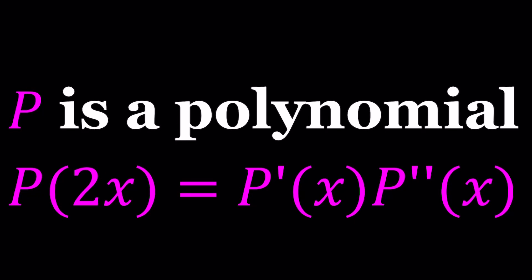Hello everyone. In this video, we're going to be solving a polynomial equation. So P is a polynomial, and we have P of 2x equals P prime of x multiplied by P double prime of x. In this context, P prime means the first derivative, and P double prime means the second derivative of P with respect to x. And P of 2x is obtained by replacing x with 2x in P of x.